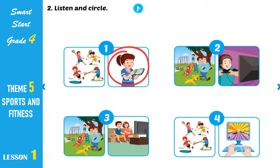B. 2. Listen and circle. Look at the pictures. Listen. There is one example. One: Oh, Lucy, you shouldn't play mobile games all the time. Ugh, Mom. Can you see the circle? This is an example. Now listen and circle. 2. Oh, boys, you should play outside. It's a beautiful day. Okay, Mom. 3. Ben, you shouldn't watch TV all the time. What is my favorite TV show? 4. Sam! Sam! You should play sports. Take the kids to the sports club. Okay, let's go, kids.